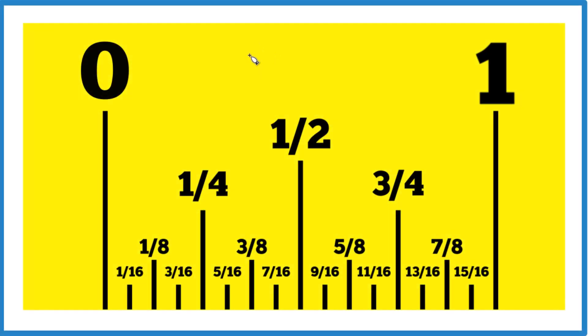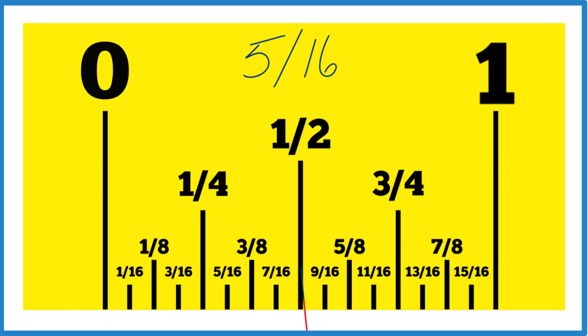Here's how you find five sixteenths on a ruler or a tape measure. So we have zero to one — the whole thing is one. If you cut that right in half, right down the middle, you end up with one half.